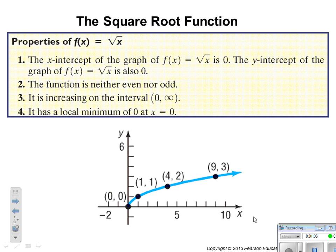This is the square root function: f of x equals the square root of x. The x-intercept is at 0 and the y-intercept is also at 0. The function is neither even nor odd. It is increasing on its domain and it has a local minimum of 0 at x equals 0. The domain and range are positive real numbers.